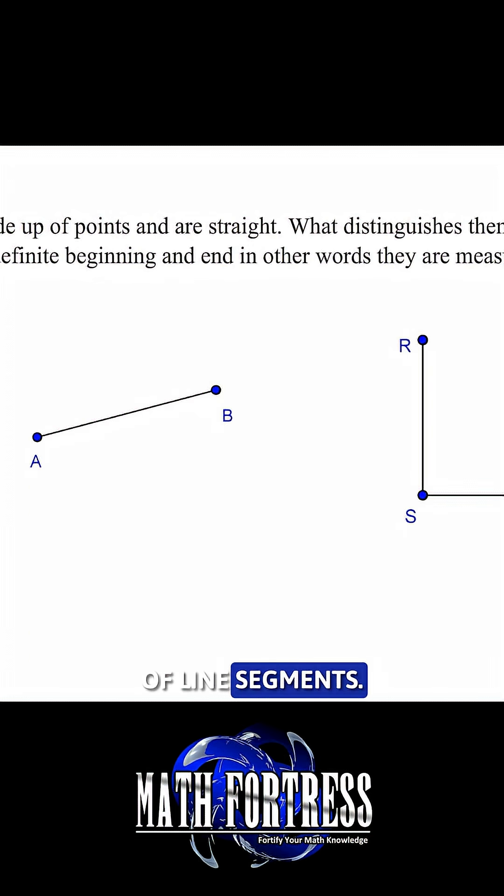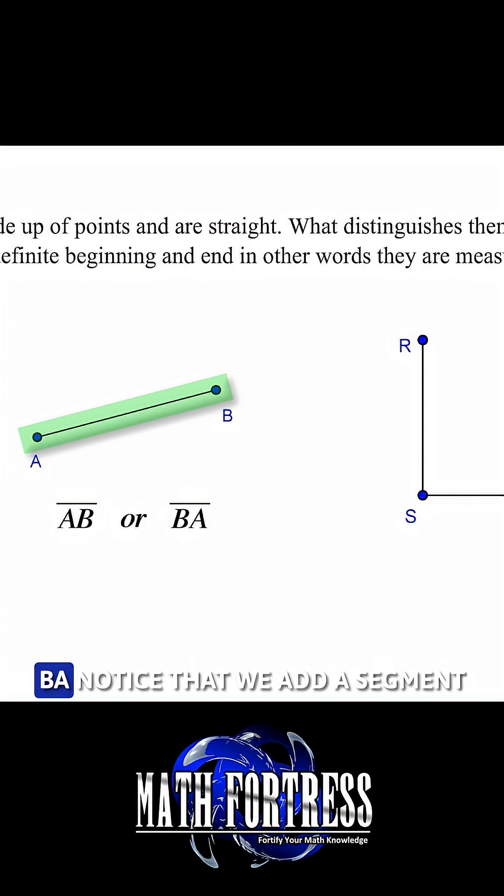The following are examples of line segments. The line segment on the left can be denoted as AB or segment BA. Notice that we add a segment symbol on top of the letters in order to distinguish it from that of a line, which contains arrows on both ends.